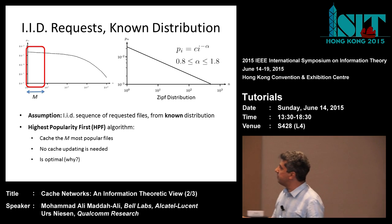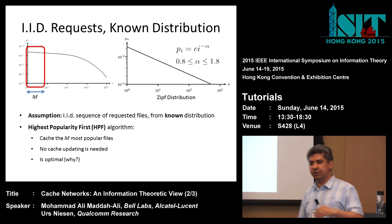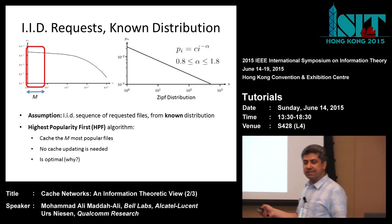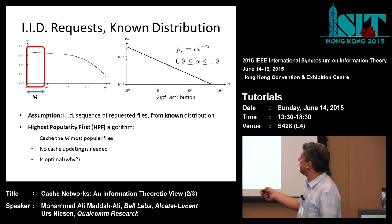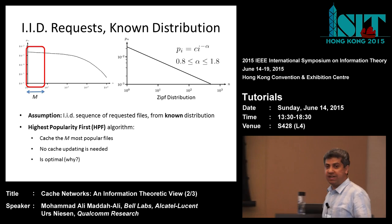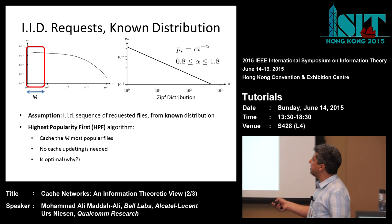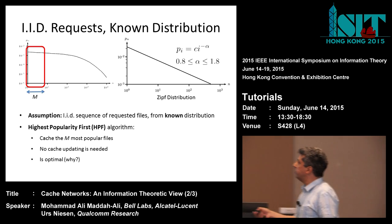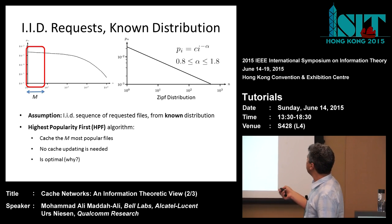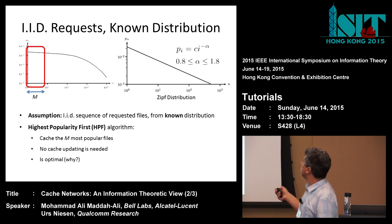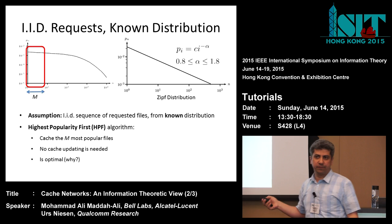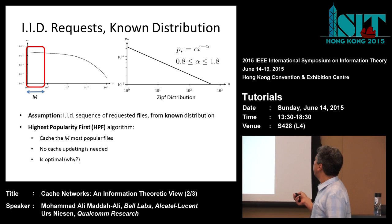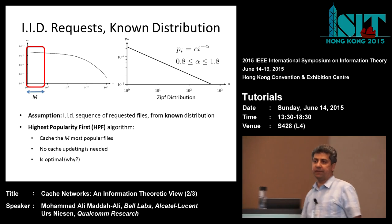Before continuing, one important comment on popularity distributions: one of the challenges for content delivery networks is that this distribution has a very heavy tail — it goes down very slowly. The most popular model is the Zipf distribution, where if you order files by popularity, the probability goes down as i to the power of minus alpha, where alpha is typically between 0.8 and 1.8. The probability that users choose files from the tail is not negligibly small.